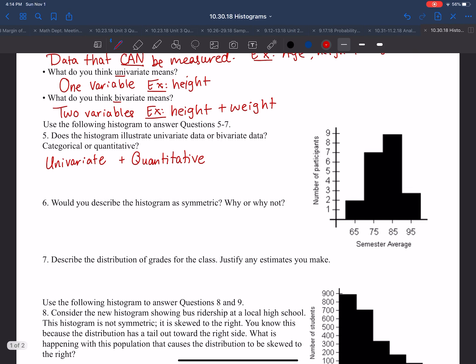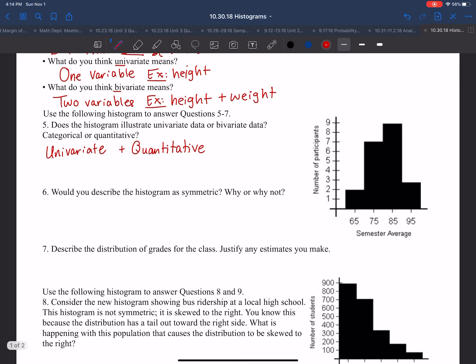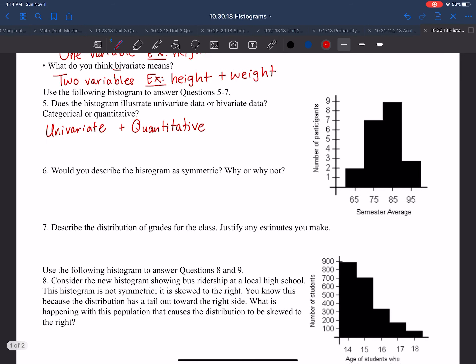Would you describe the histogram as symmetric? Why or why not? Well, it's not too far off of symmetric, but it's not perfect. You can see this graph down here is not symmetric at all. It's very high on the left side and very low on the right side. This one, its peak is fairly close to the center, but it's not exact. So we're going to say fairly, but not exact.